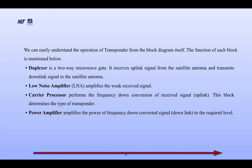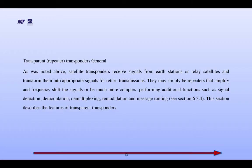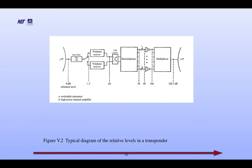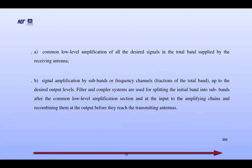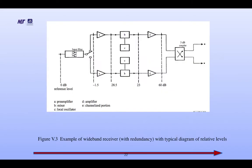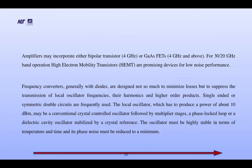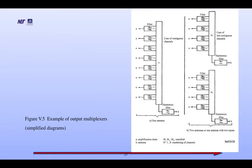We have discussed the speciality of the duplexer, low noise amplifier, carrier processor, power amplifier, and transponder general characteristics. This is the typical diagram of relative levels in a transponder. The wideband receiver subsystem and generalization subsystem diagrams are shown here.